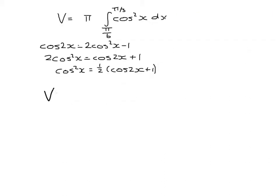This means that the volume is the integral of pi times 1 half, so bring the constant in front of the integral sign: cos of 2x plus 1, between pi over 6 and pi over 3.